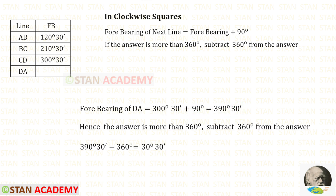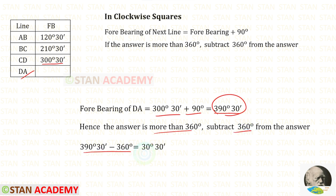Now let us find the fore bearing of DA. That will be 300 degrees 30 minutes plus 90 degrees. When we do that, we will get 390 degrees 30 minutes. We know that it is more than 360, so from that we have to subtract 360 degrees. When we do that, we will get 30 degrees 30 minutes.